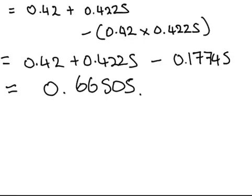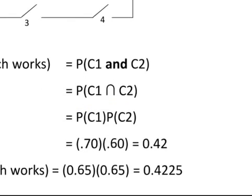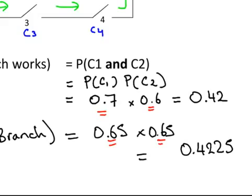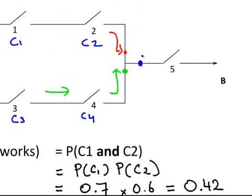So that's the answer for this part here. Now this is just before it gets to circuit 5. I'm just going to go back here a second. So the probability of being able to get here is 0.66505.